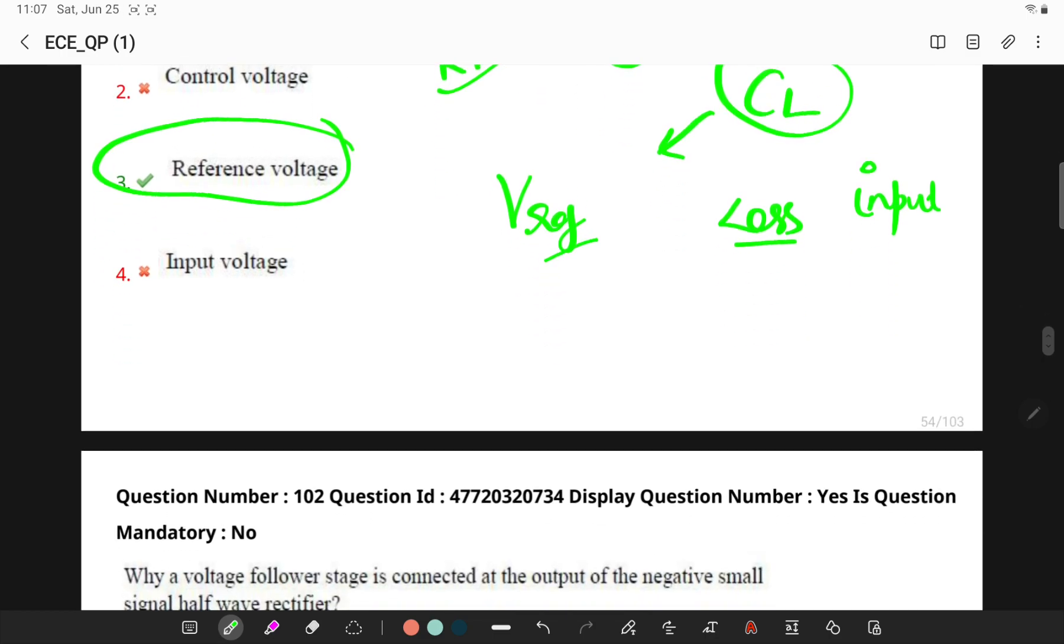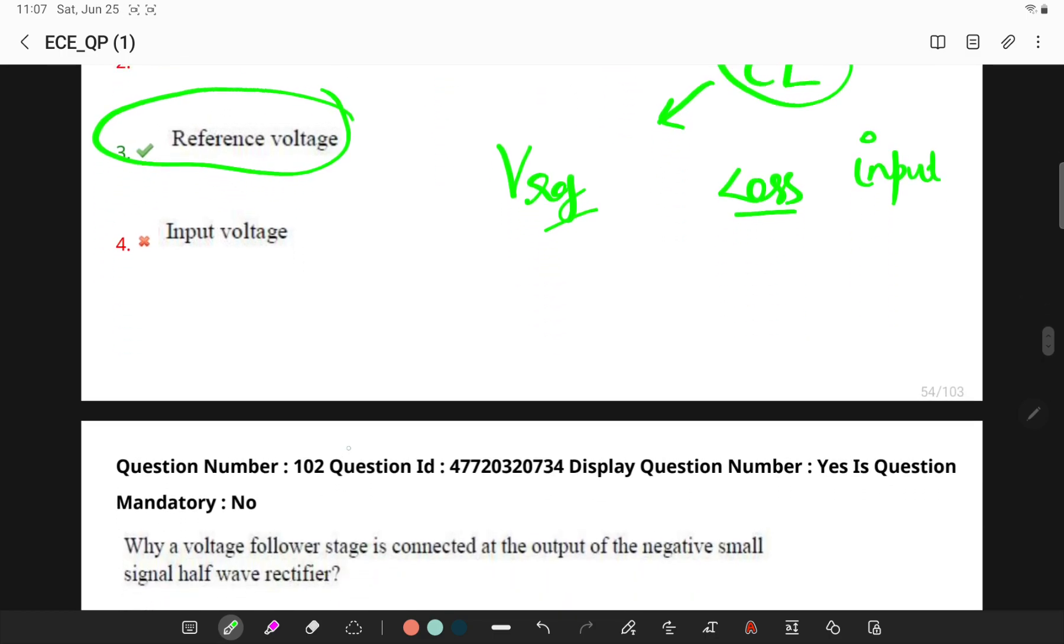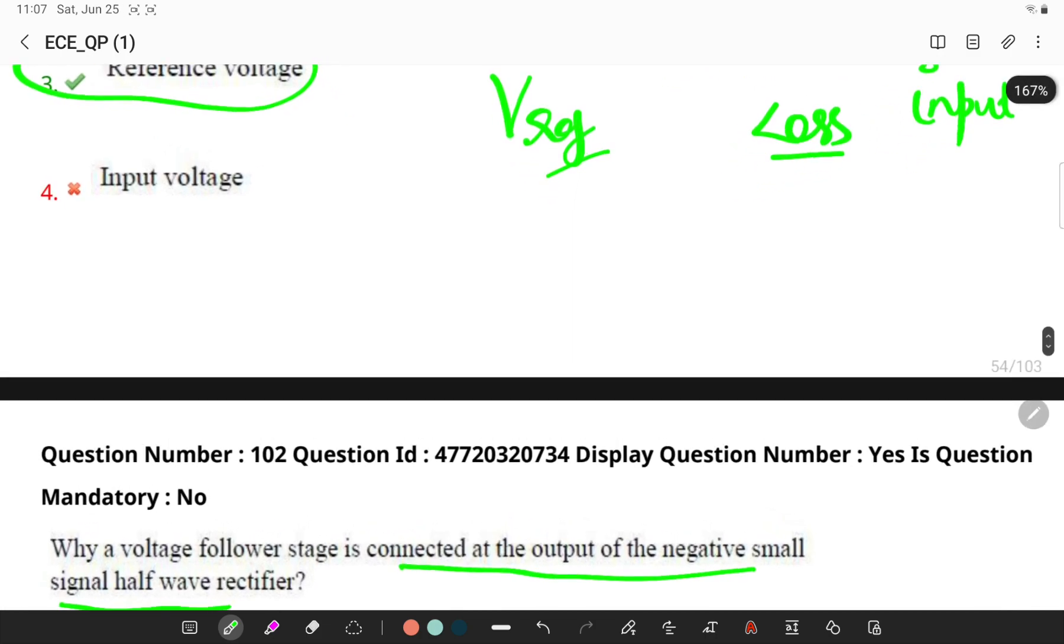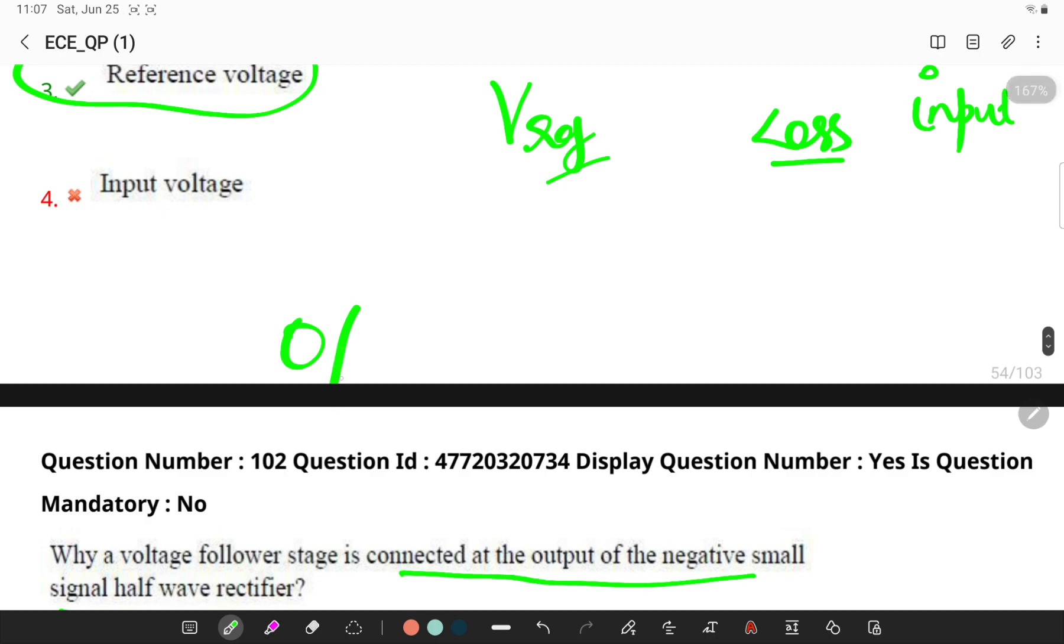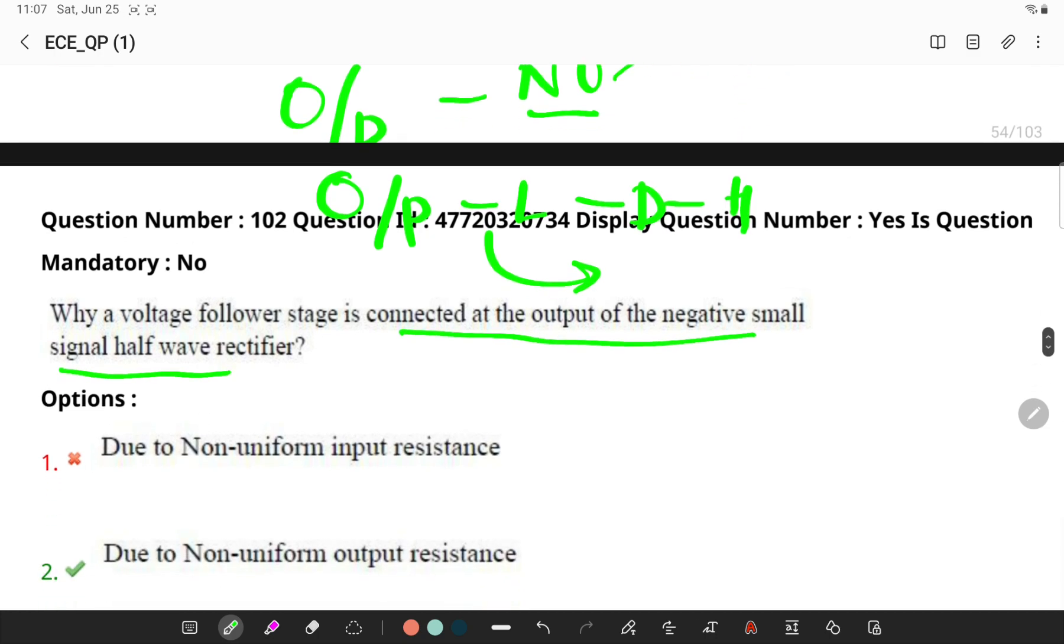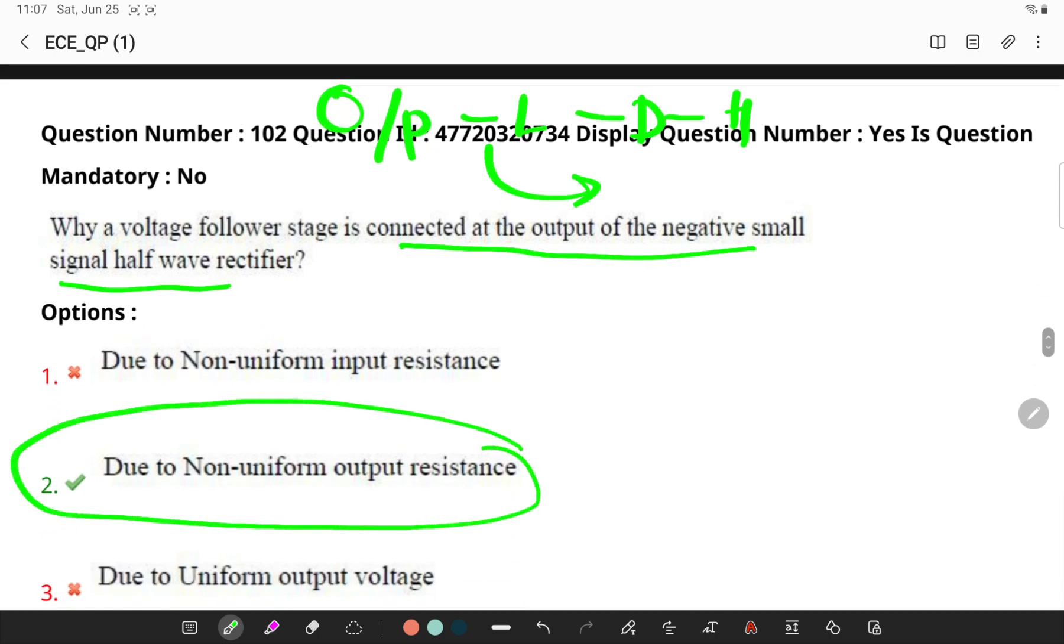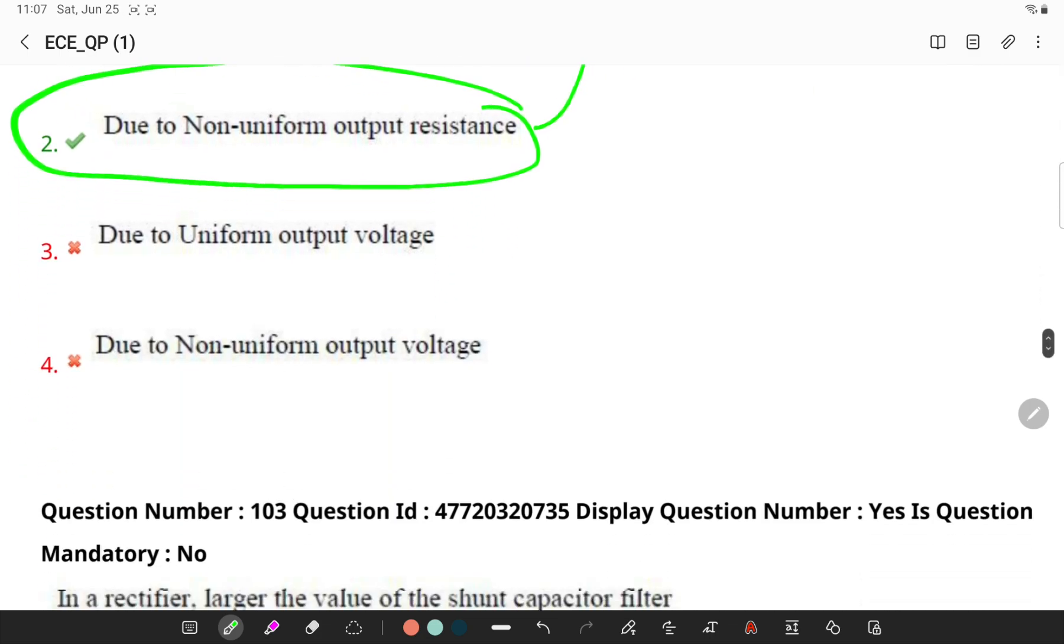Next, why is a voltage follower stage connected to the output of a negative small signal amplifier? Remember, the output resistance of a circuit is non-uniform as it depends on the state of a diode. The output impedance is low when the diode is high. Due to the non-uniform resistance, the voltage follower stage is connected.